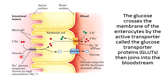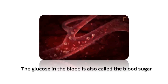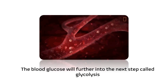The glucose broken down from all of this chemical digestion will now cross the membrane of the enterocytes by the active transporter, which we call glucose transporter proteins, or GLUTs. Then they join into the bloodstream. Once glucose is already in the bloodstream, it is called blood sugar or blood glucose, which will further continue into the next step called glycolysis.